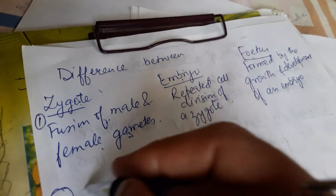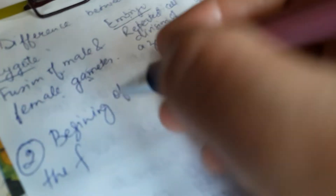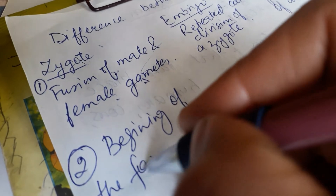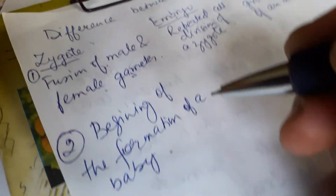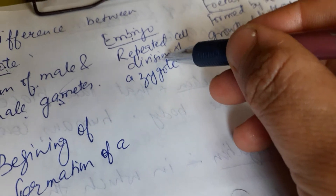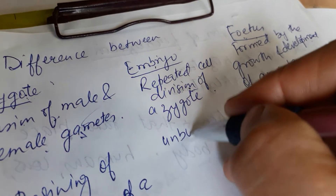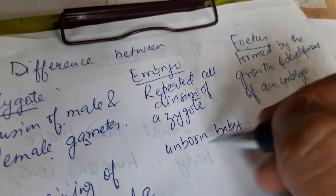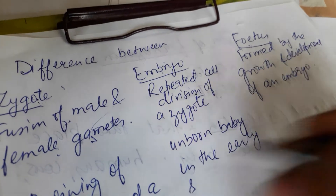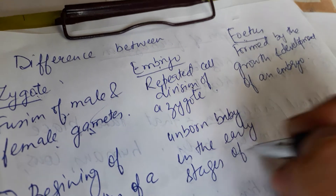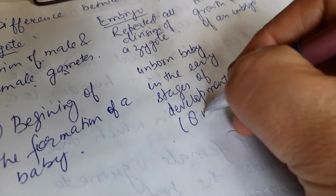This is the first difference. Second difference: the zygote is the beginning of the formation of a baby. An embryo is an unborn baby in the uterus in the early stages of development — that means up to eight weeks.